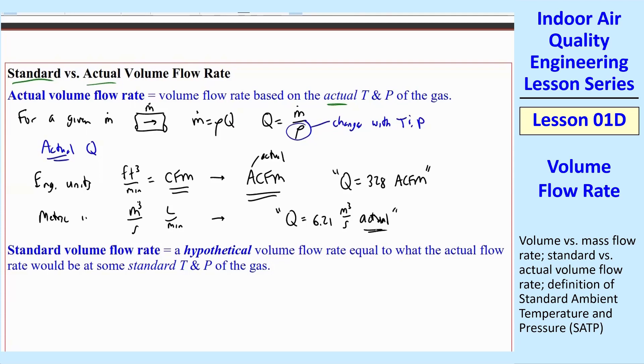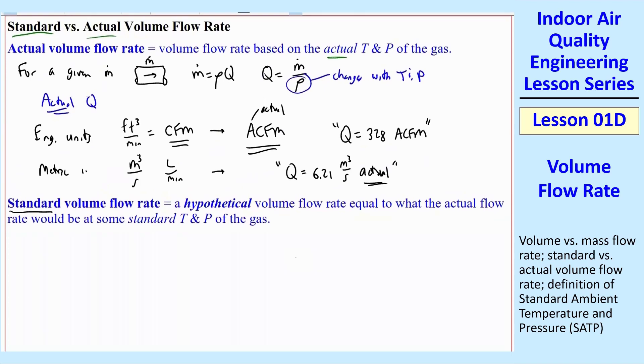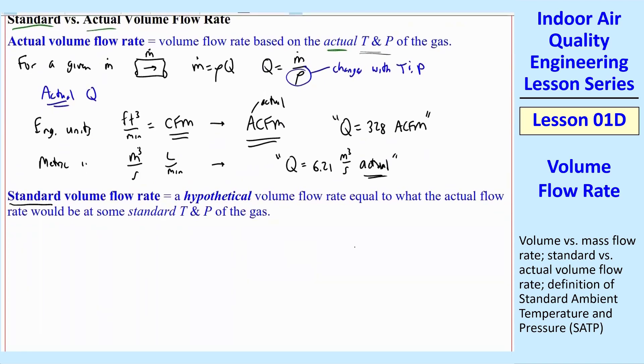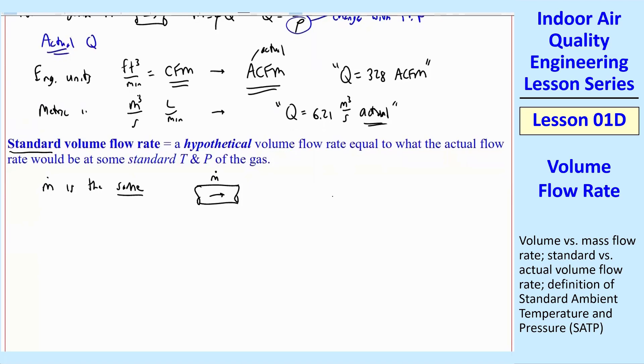In metric, it's not quite so simple. We typically use meter cube per second or liters per minute, etc. And there's no special unit. So we would have to write this as Q equals, say, 6.21 meter cube per second actual. You would write the word actual there to indicate that this is an actual volume flow rate. So all of that is typical of what you've done in fluid mechanics, so nothing new there. What may be different for you is this so-called standard volume flow rate. This is a hypothetical volume flow rate equal to what the actual flow rate would be at some standard temperature and pressure of the gas.